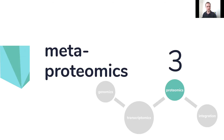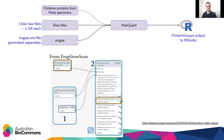The third and final workflow is metaproteomics, and this is the most straightforward element — even simpler than the two preceding workflows. Raw files generated by the mass spectrometer are passed to MaxQuant along with a parameter file. The putative proteins predicted from the metagenomics workflow are also passed to MaxQuant, and the protein groups output table from MaxQuant is retained for the integrative analysis. All outputs now converge on R for that integrative analysis.